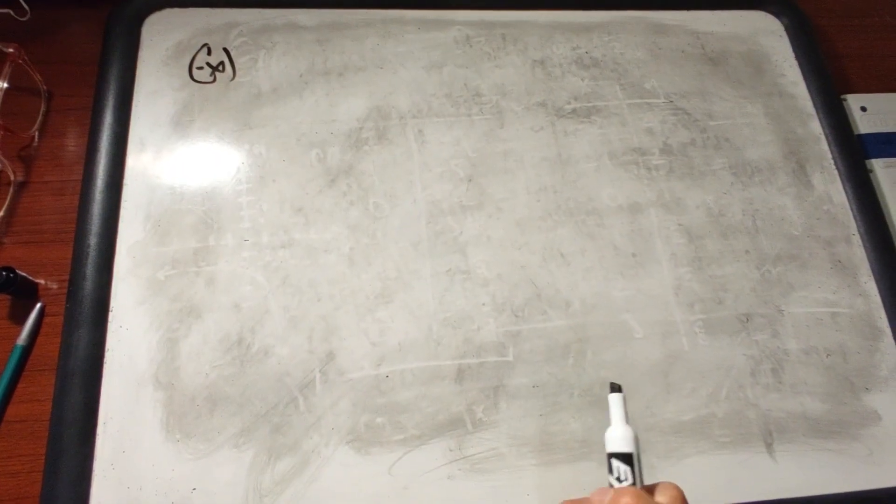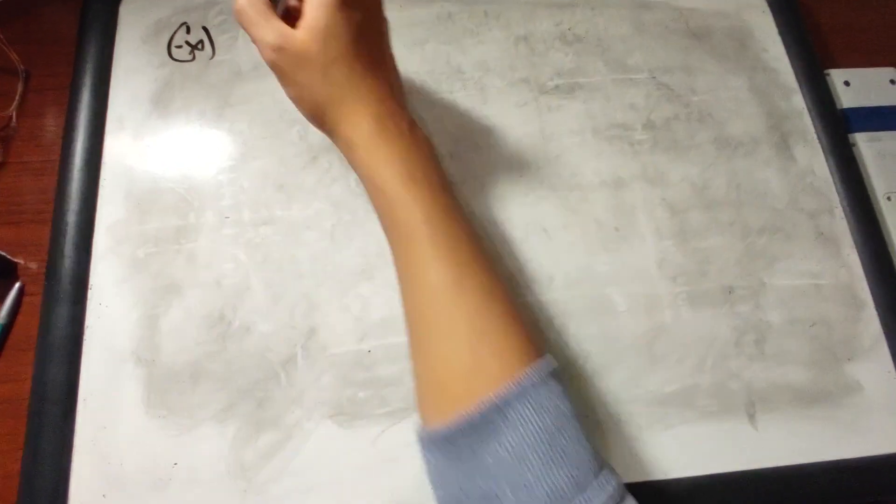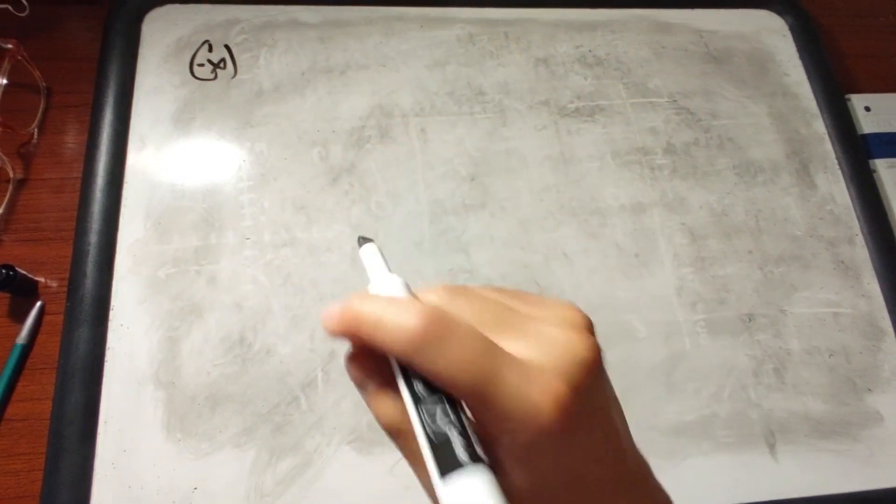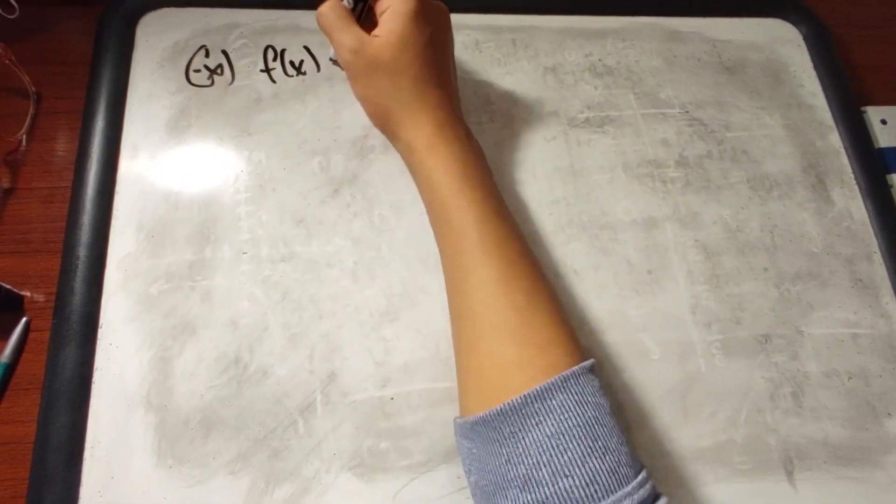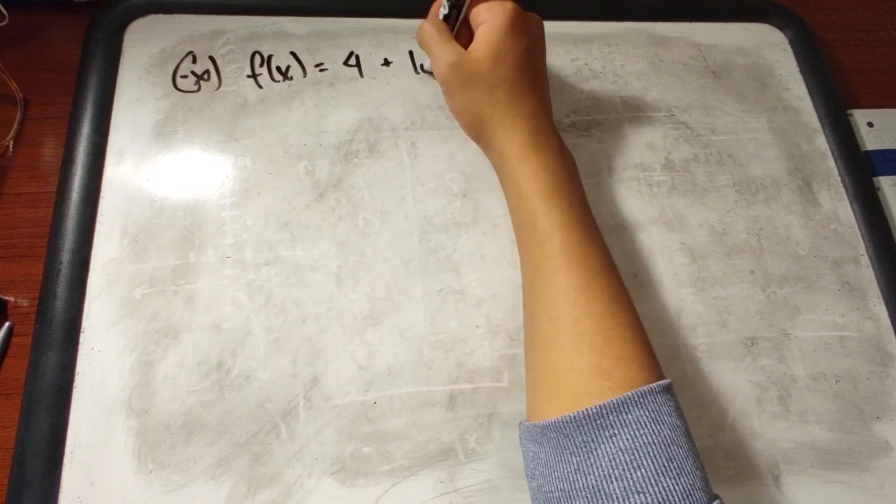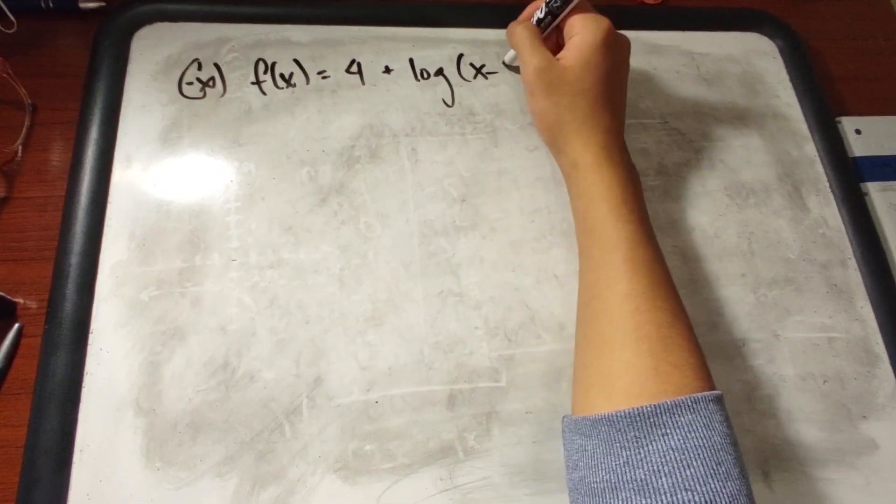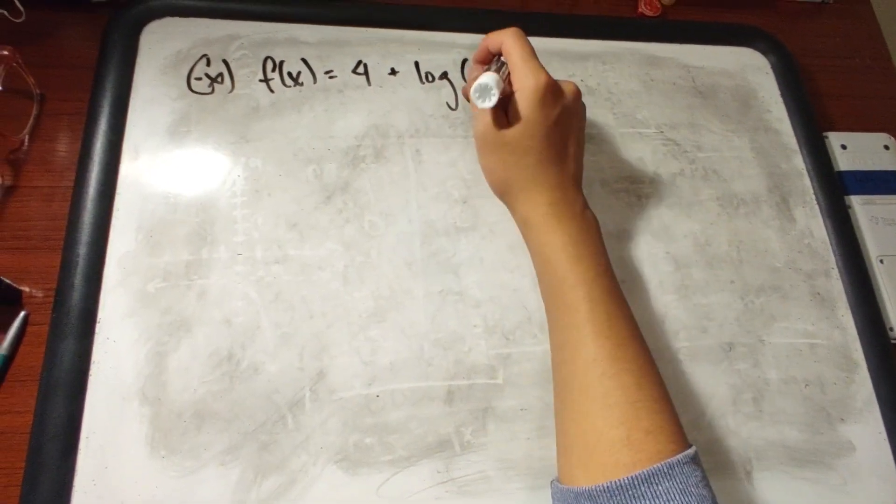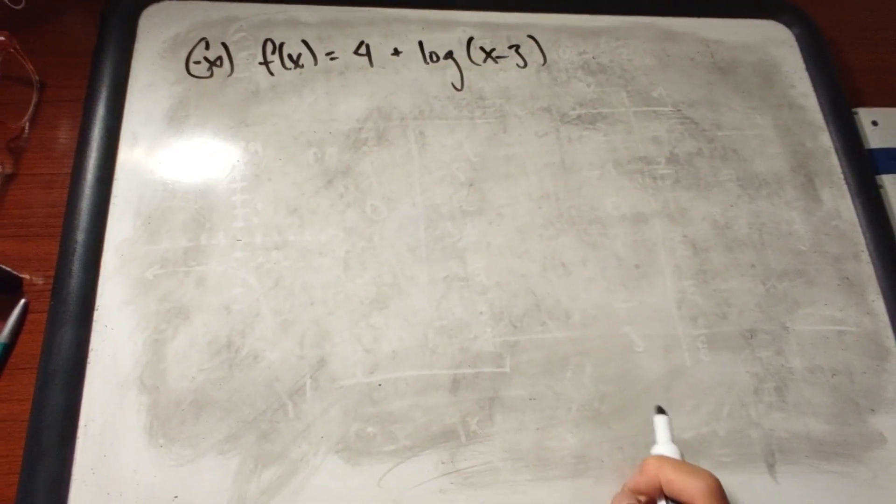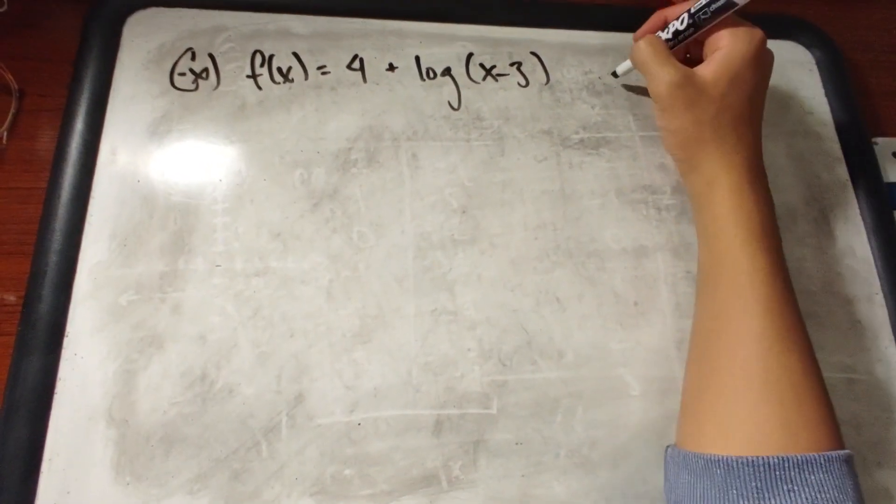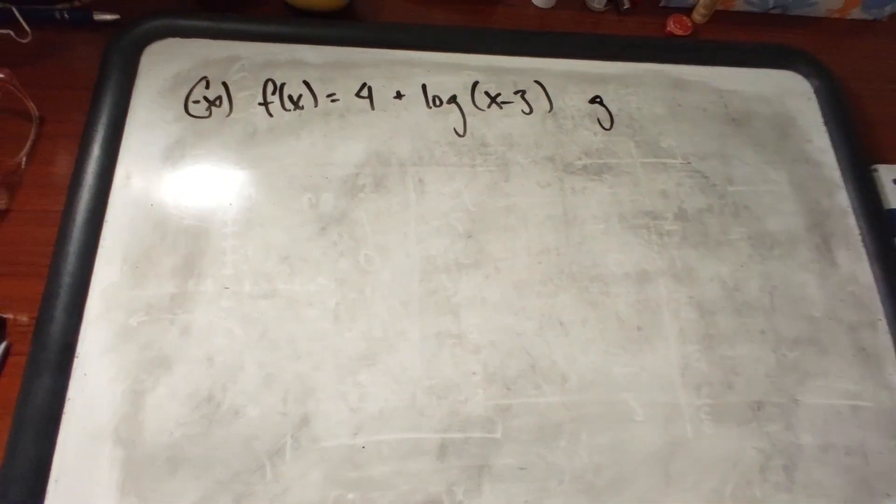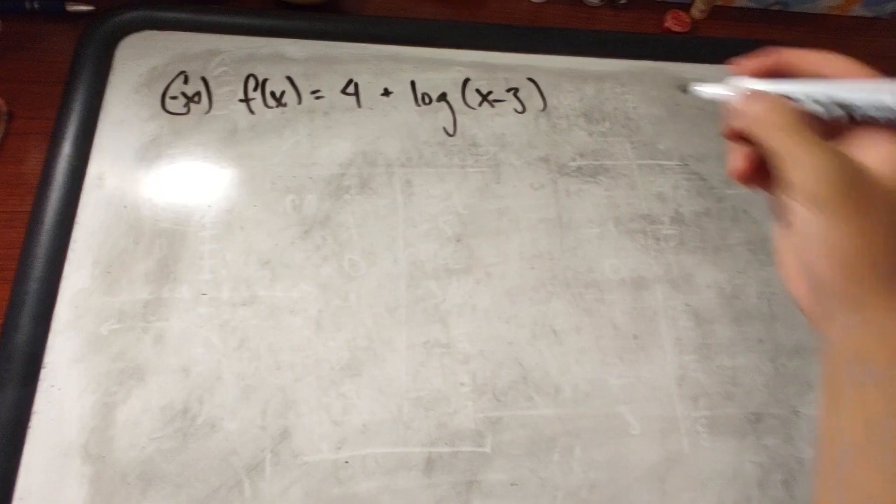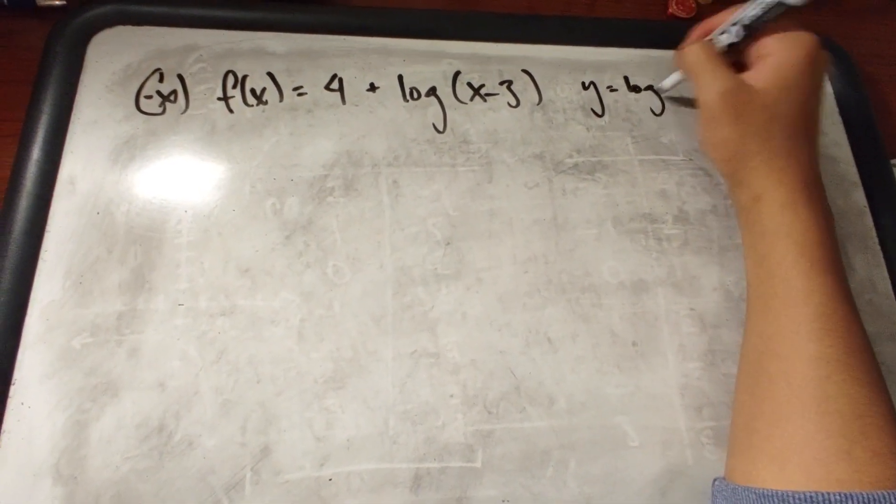Now we're going to solve a problem that requires graphing a logarithmic function. It'll be f(x) equals 4 plus log of (x minus 3). Because there's nothing in the base, this is a natural log, so it'll technically be log base 10. And with this, the base function, without the transformations, would just be y equals log of x.